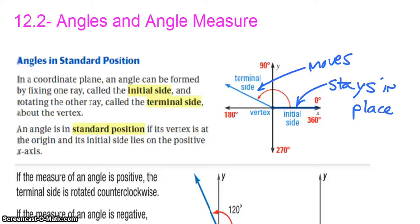Hello everyone, and welcome to 12.2, which is going to be all about angles and angle measures. We're finally going to learn what that radian thing is on our calculator. Angles in standard position have two pieces: an initial side and a terminal side. The initial side stays in place, in line with the x-axis, and also with our unit circle at 0 and 360 degrees, on the positive x side.